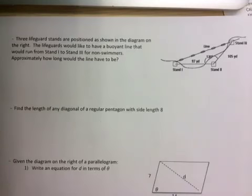Okay, so this is a podcast to help you with the last couple questions on the notes. The first question says that there are three lifeguard stands and what we care about is the distance between stand one and stand three, so we're going to use law of cosines and we can set it up like this.